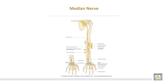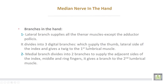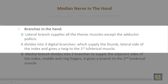The anterior interosseous nerve supplies flexor pollicis longus, the lateral half of flexor digitorum profundus, and pronator quadratus muscle. The median nerve arises by two roots in the axilla from the lateral and medial cords of the brachial plexus, descends in the upper arm with no branches, then descends in the forearm passing between the two heads of pronator teres muscle.